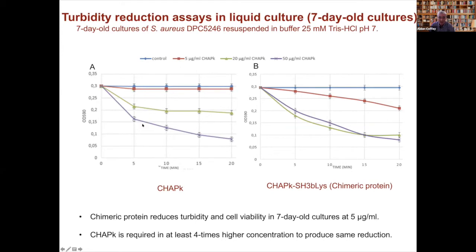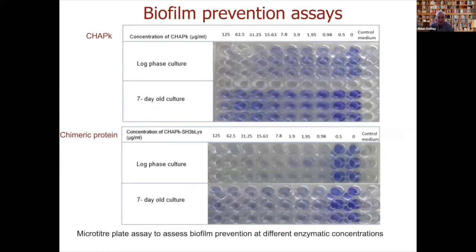At five micrograms per ml with CHAPK you've got no activity whatsoever — no reduction in optical density. With the chimeric protein you see an improvement, and also at 20 micrograms per ml a more marked reduction in optical density. The chimeric protein is almost double the size of CHAP, so there are half the number of active sites, meaning it's actually performing even better than the graphs suggest when expressed in micromolar terms. In biofilm prevention assays, CHAPK is slow in reducing biofilms in both log phase and seven-day-old cultures, whereas the chimeric protein works much faster.